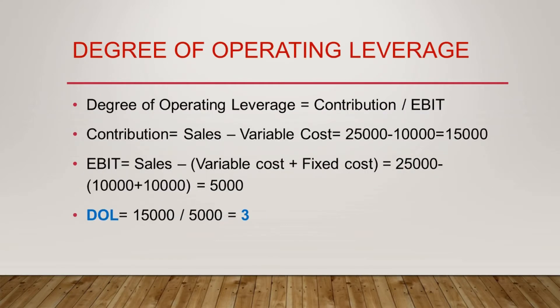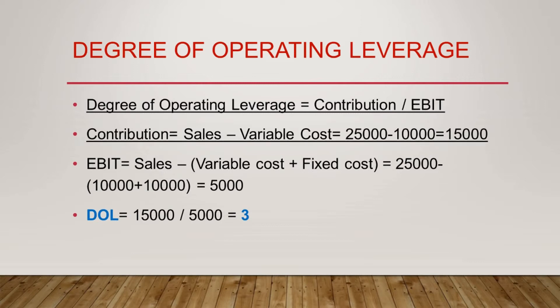The formula for Degree of Operating Leverage is contribution divided by EBIT. To calculate contribution, the formula is sales minus variable cost. Deducting variable cost from sales gives us contribution of $15,000. EBIT is when you deduct all costs from sales revenue — so EBIT equals sales minus variable cost minus fixed cost. Combining total costs and deducting gives us EBIT of $5,000.